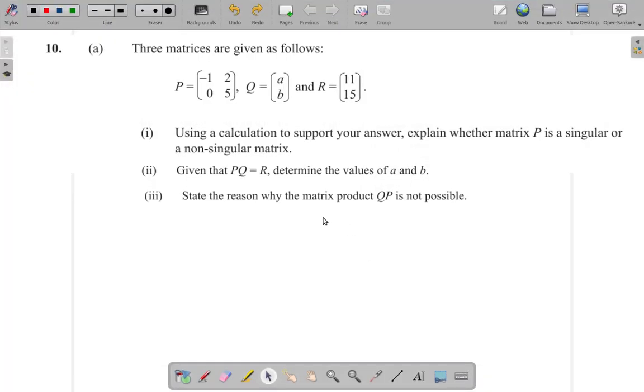Let's look at the next part of this question. I've already set it up here. It says state the reason why the matrix product QP is not possible. Well, let's see what's happening here.